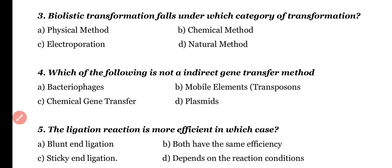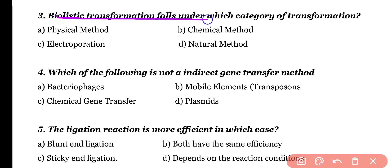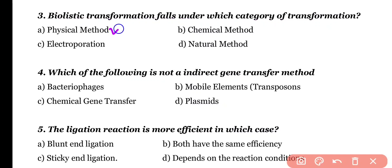Question 3. Biolistic transformation falls under which category of transformation? Physical method, chemical method, electroporation, or natural method. Correct answer is option A. Transformation by using a particle gun is known as biolistic transformation and it falls under the physical transformation category.